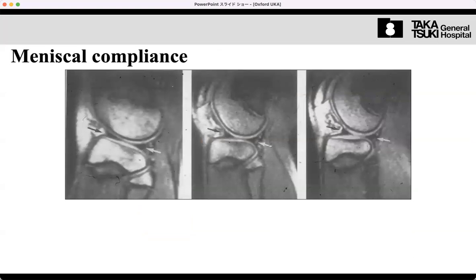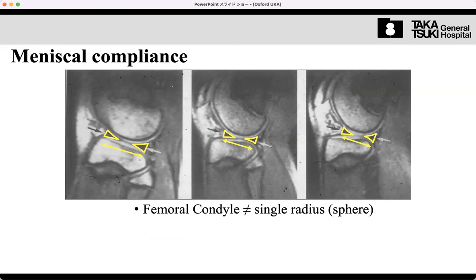Meniscus can move and change its location. In extension, meniscus is very thin and wide and located anterior. In flexion, the meniscus is thicker and narrower and located posterior. The meniscus can change its shape according to the radius of the femur. In extension, radius is small. Actually, it is impossible to reproduce this function using artificial material.